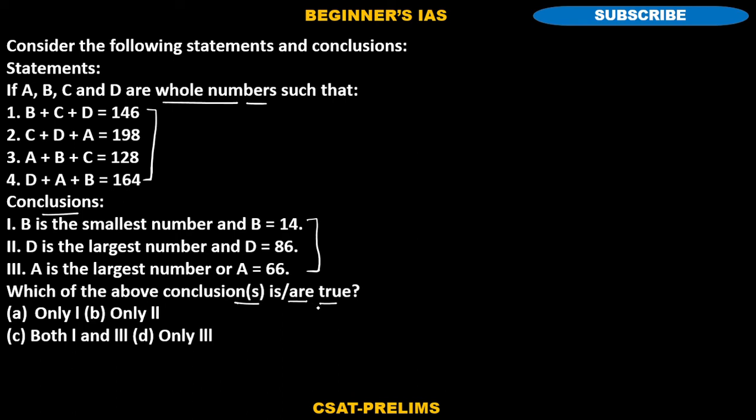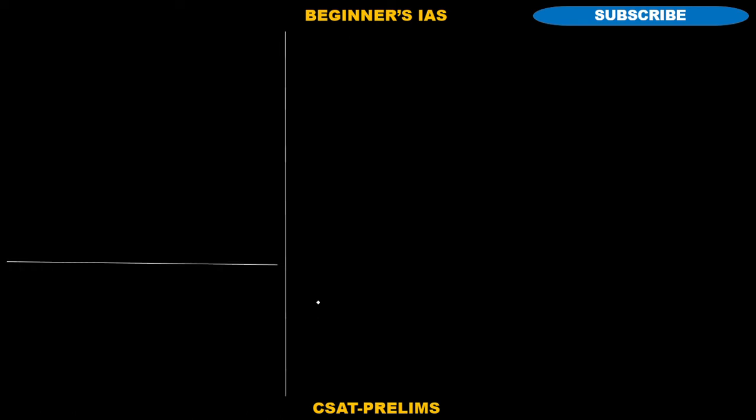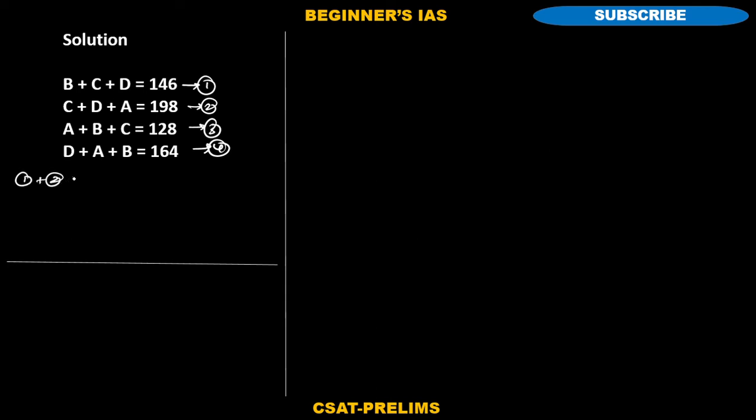Let us solve the problem. Just consider those four equations as 1, 2, 3, and 4. After taking this as equations, I'm considering 1, 2, 3, and then 4. Add equation 1 plus 2 plus 3 plus 4.